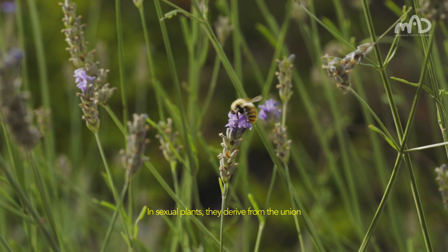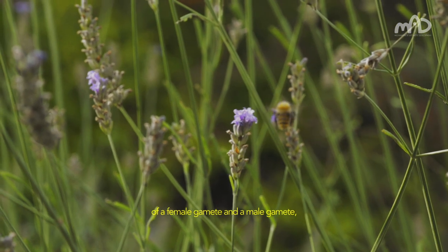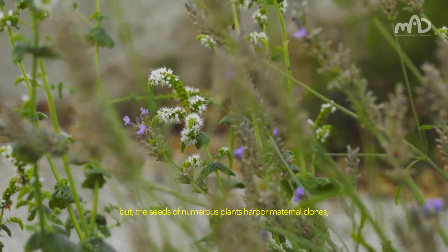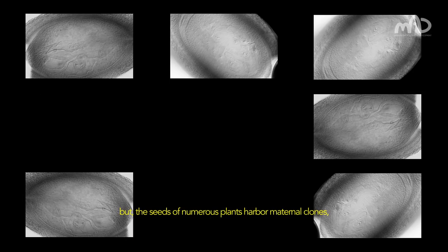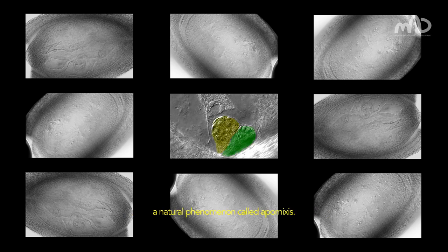In sexual plants, they derive from the union of a female gamete and a male gamete, but the seeds of numerous plants harbor maternal clones, a natural phenomenon called apomixis.